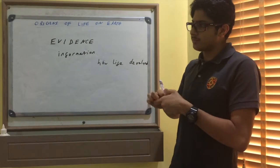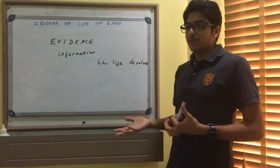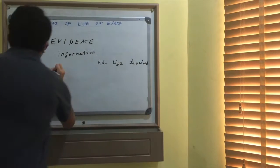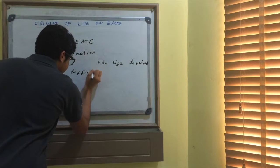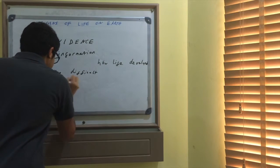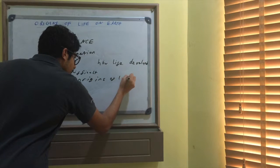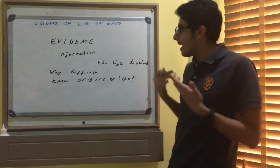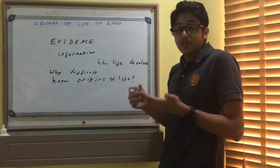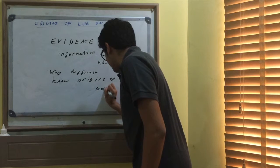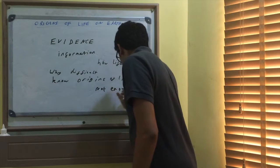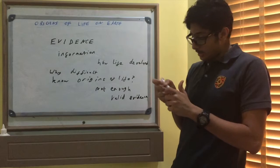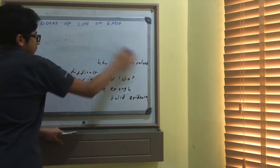They usually give you a question in your exam along the lines of this: Why is it difficult for scientists to know exactly the origins of life on Earth? Well, the answer is very simple - there just isn't enough valid evidence. Fossils are a good piece of evidence, but they're just not enough.